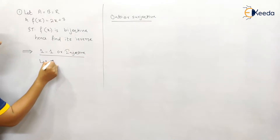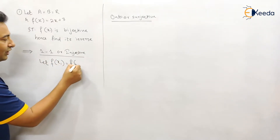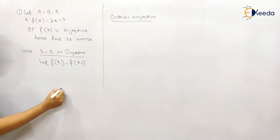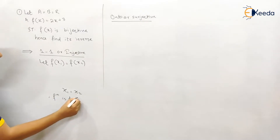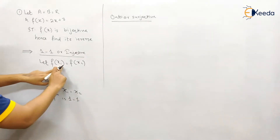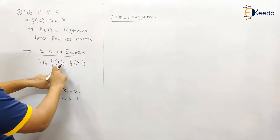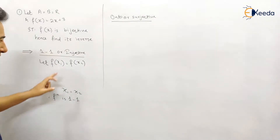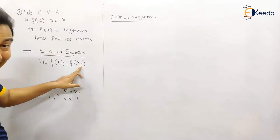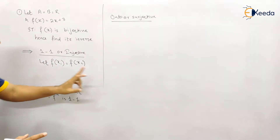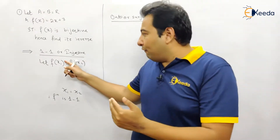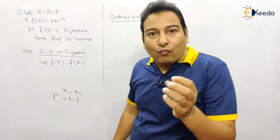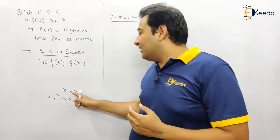The procedure is fixed and we'll always start with the same statement in all problems. We assume there are two different elements x1 and x2 whose images are the same. This is not possible if elements are different — their images should be different. After a few steps, we will conclude the elements are also the same.